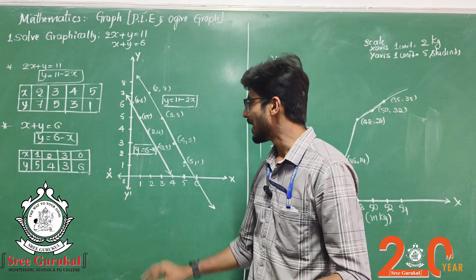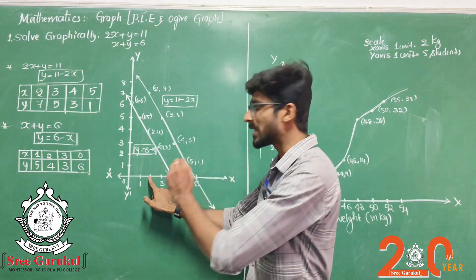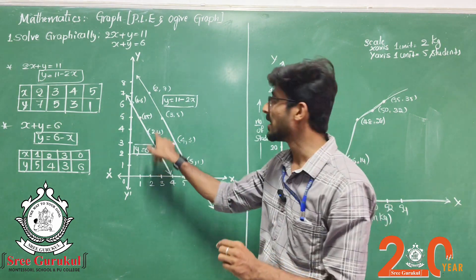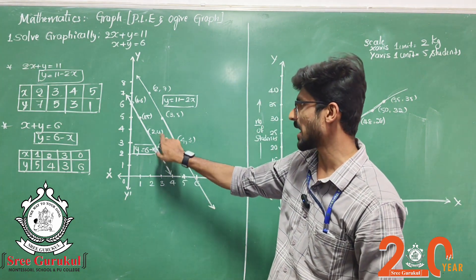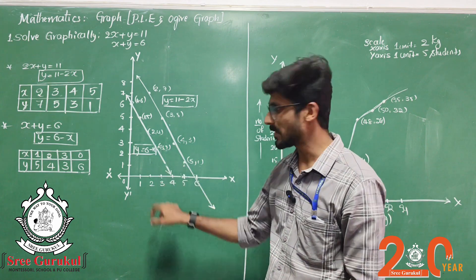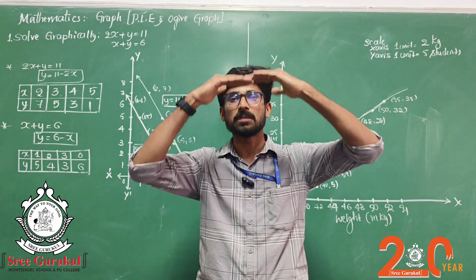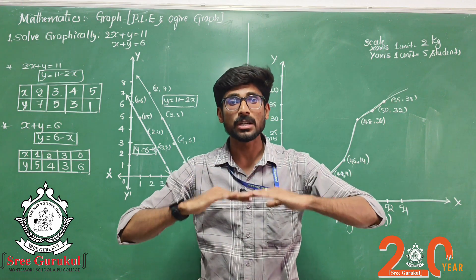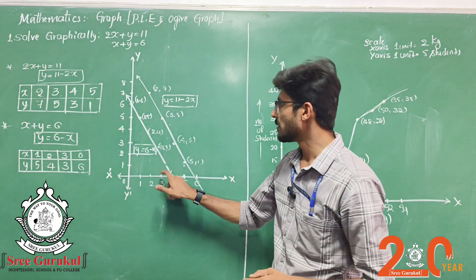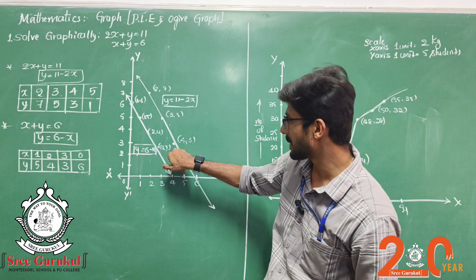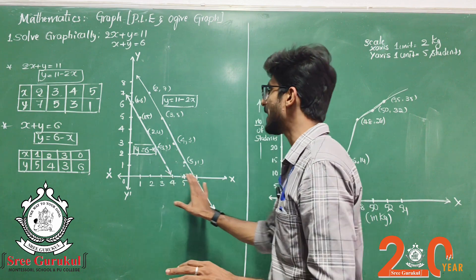When plotting, stand on the X value — if the Y value is positive, climb up to get the point. For example, if X is 3 and Y is 5, stand at 3 and go up 5 steps. If the Y value is negative, fall down below the X-axis. So for X equals 4 and Y equals 3, climb up 3 steps to get the point (4, 3). This is how you plot the coordinates.